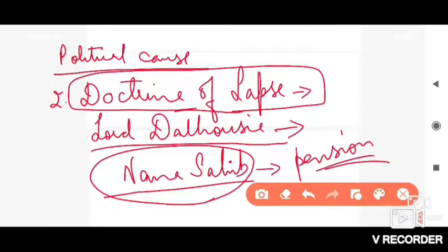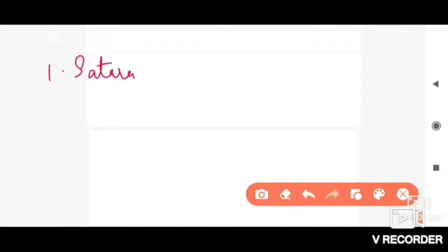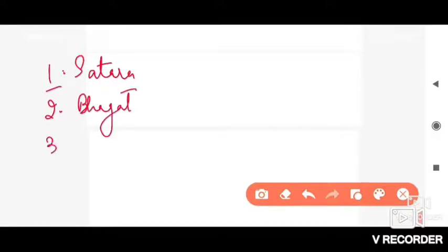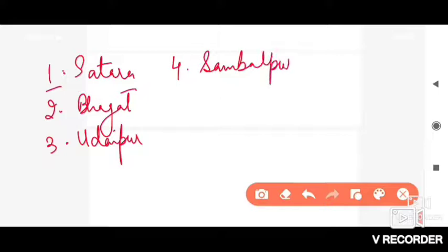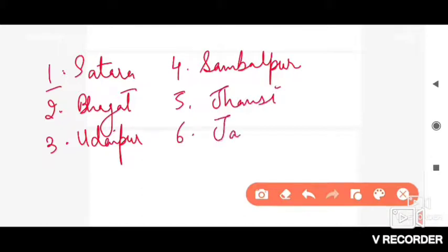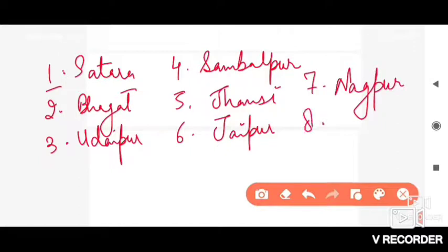According to the Doctrine of Lapse policy, the first state that was captured was Satara. The second one was Bhagat, the third was Udaipur, fourth was Sambalpur, fifth was Jhansi, sixth was Jaipur, seventh was Nagpur, and the eighth was Awadh.